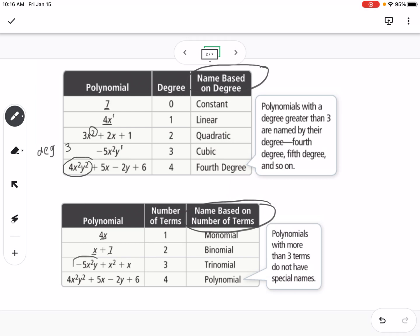Trinomial is 3 terms, so see there's 1, 2, 3 terms, so that's a trinomial. And then anything above that, so this would be 4 terms, so we just call it a polynomial.